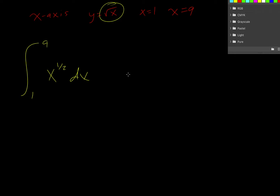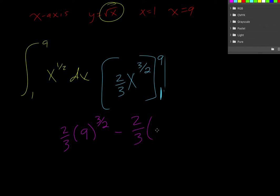So we raise it by one so that's three halves, and we divide by that new exponent so that's going to be two-thirds. You can multiply by the reciprocal if it's a fraction. And then we evaluate from one to nine. Okay, so I'm going to plug in a nine first and then subtract that when I plug in a one.